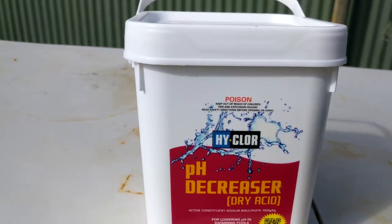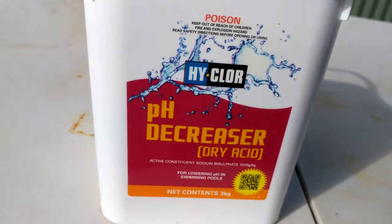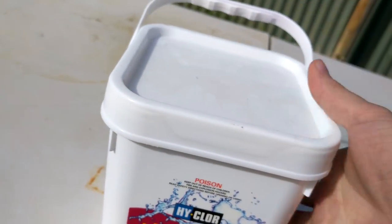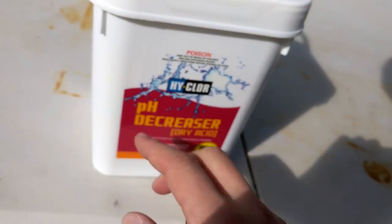This here is sodium bisulfate. I buy it from Bunnings and it's of really good purity. I mean it says a thousand grams or kilogram but I've never had any issues. The powder, it's a nice white powder, and when I say it's cheap I really mean it's cheap.